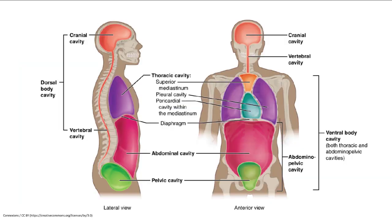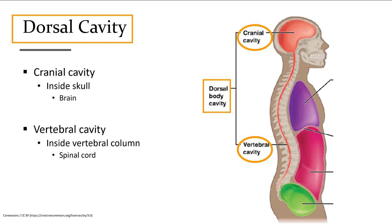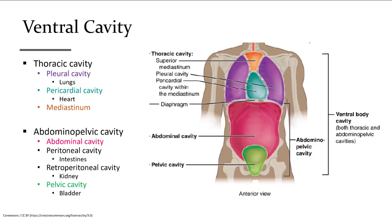This is another view where we can see each of the cavities of the ventral cavity with their own color. In the thoracic cavity, the purple is the lung, so that's the pleural cavity. That turquoise is where the heart is, that's the pericardial cavity, and we have the mediastinum in orange. Down below the diaphragm in red is the abdominal cavity, and in green we can see the pelvic cavity.